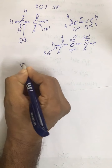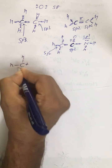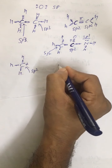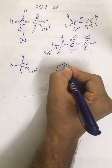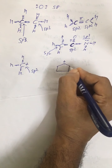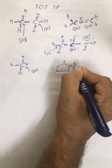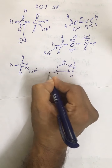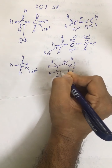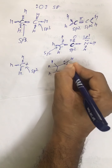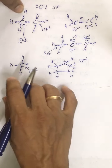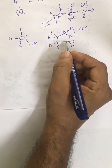In organic reaction intermediates like carbocations — for example, methyl carbocation — the carbon is surrounded by three electron pairs, so the hybridization is sp2. For a cyclic carbocation species with a positive charge, one hydrogen is removed, leaving only three electron pairs around that carbon, so it is also sp2 hybridized.